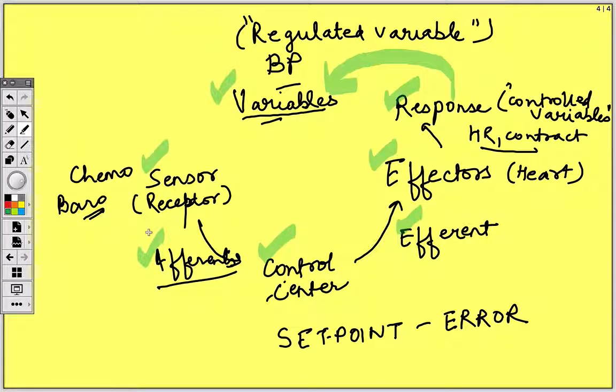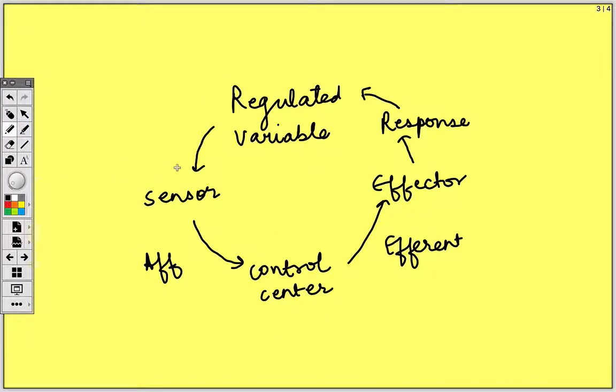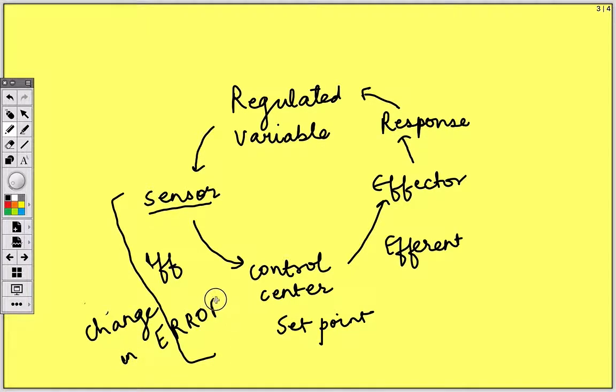But this is a very simplistic form of negative feedback system. In body, depending on various circumstances, each of the components of control systems can be changed. There can be change in sensitivity of the receptor so that the measured value is less, change in afferent response from the receptor, and also change in the set point. All these changes will lead to change in the error signal which is generated. Also there can be change in the efferent output from the control center. This is known as change in the gain of the system.